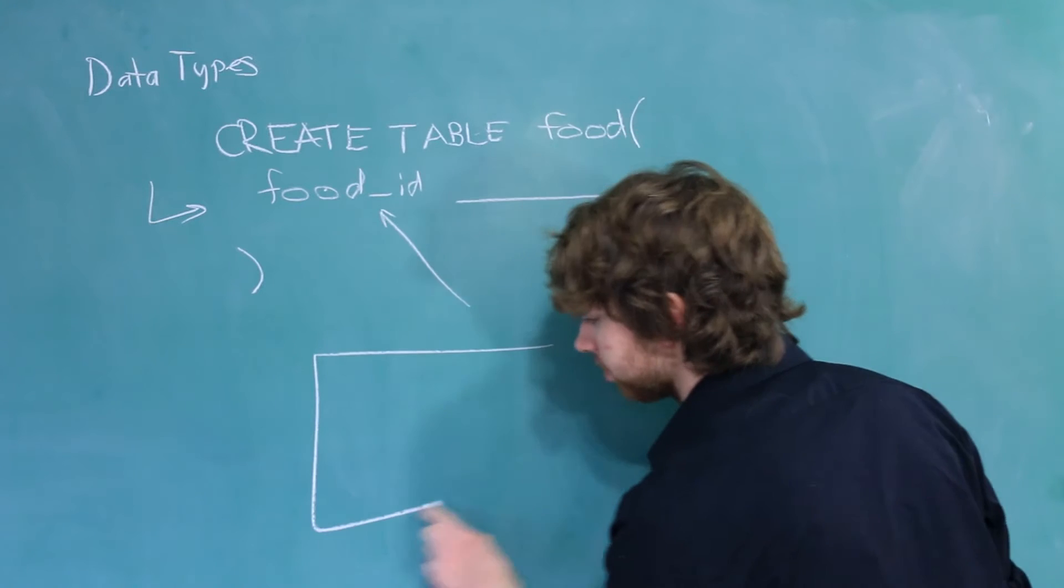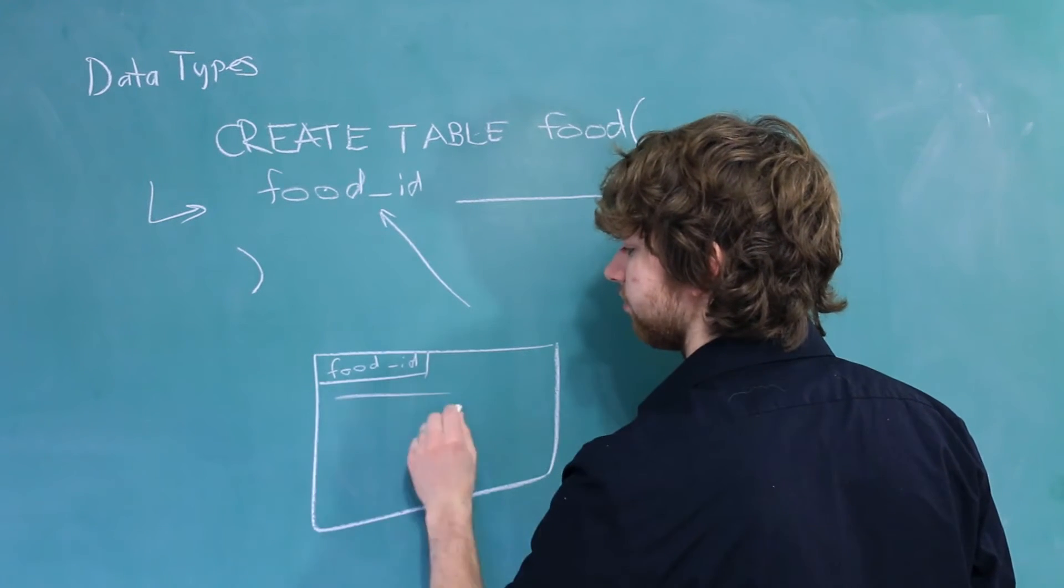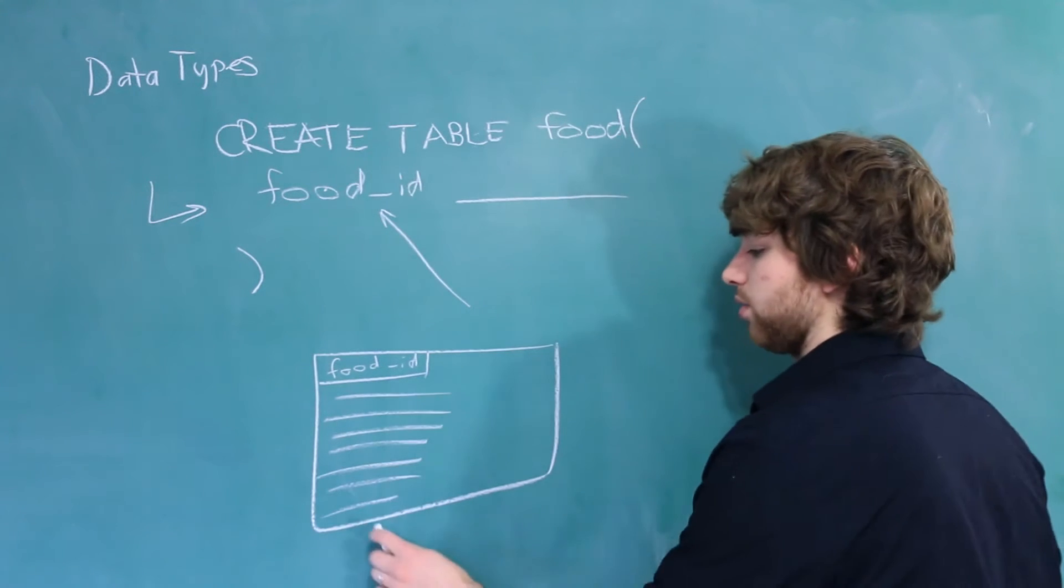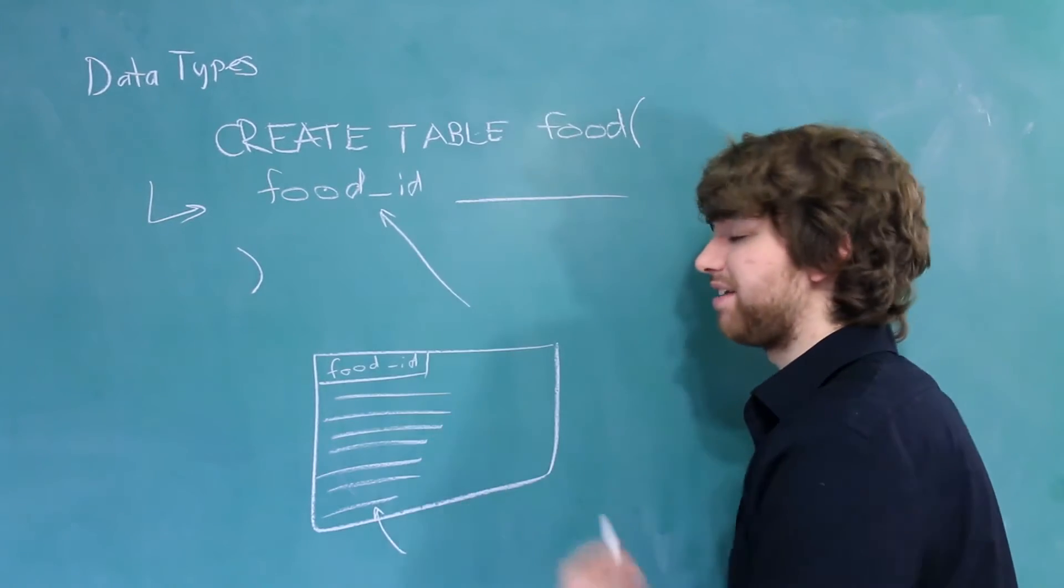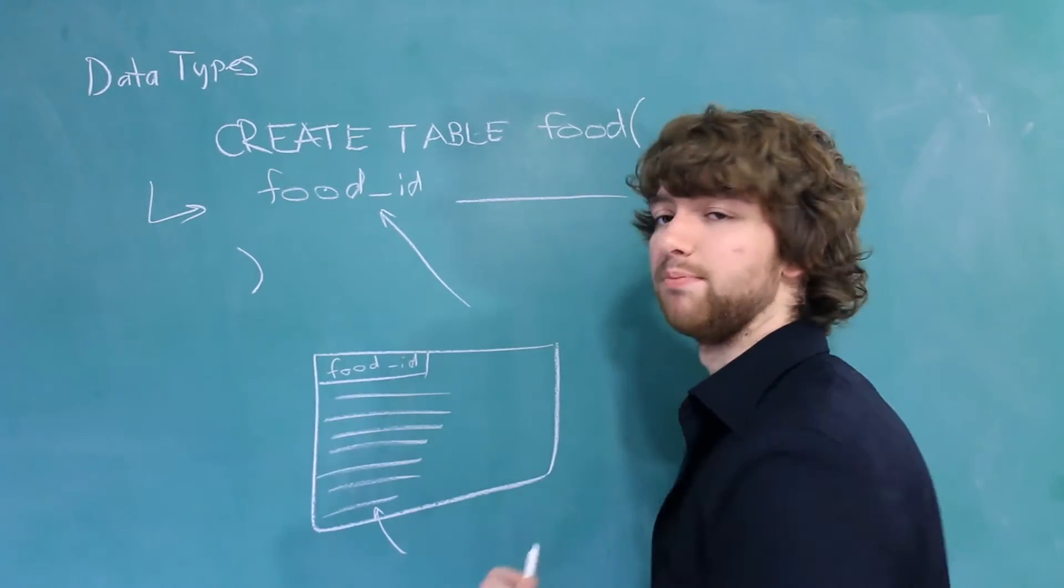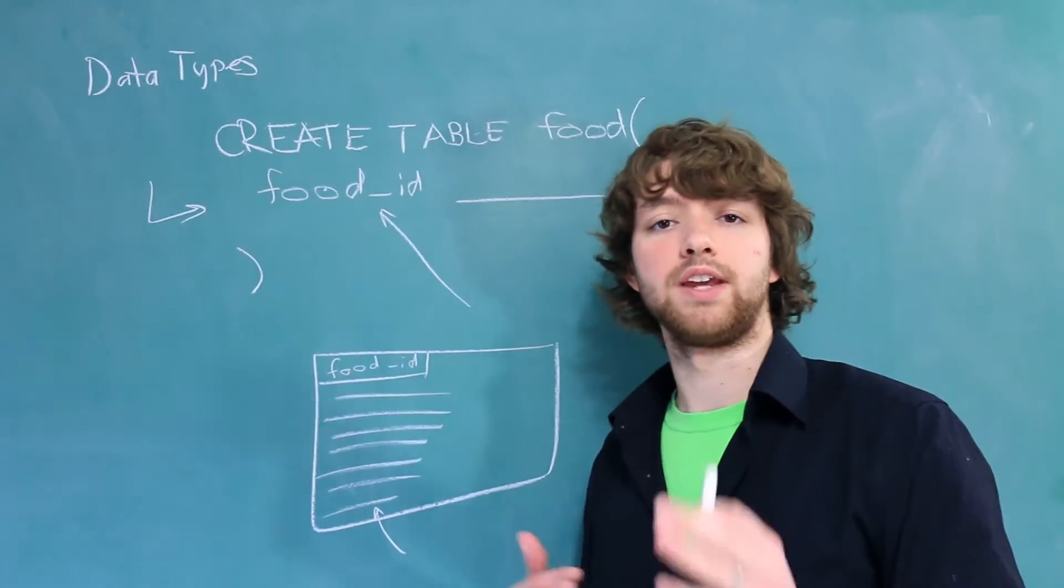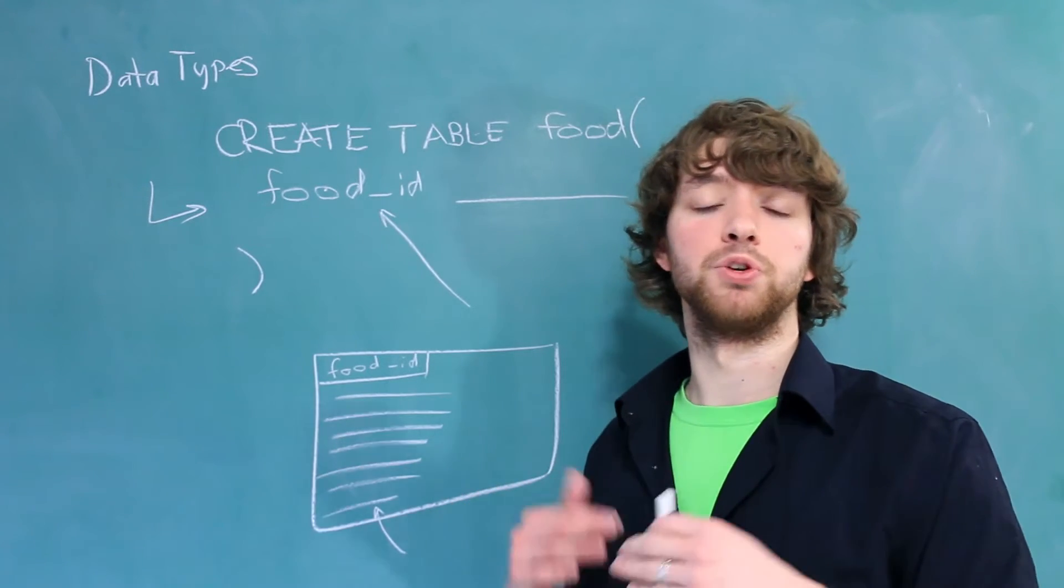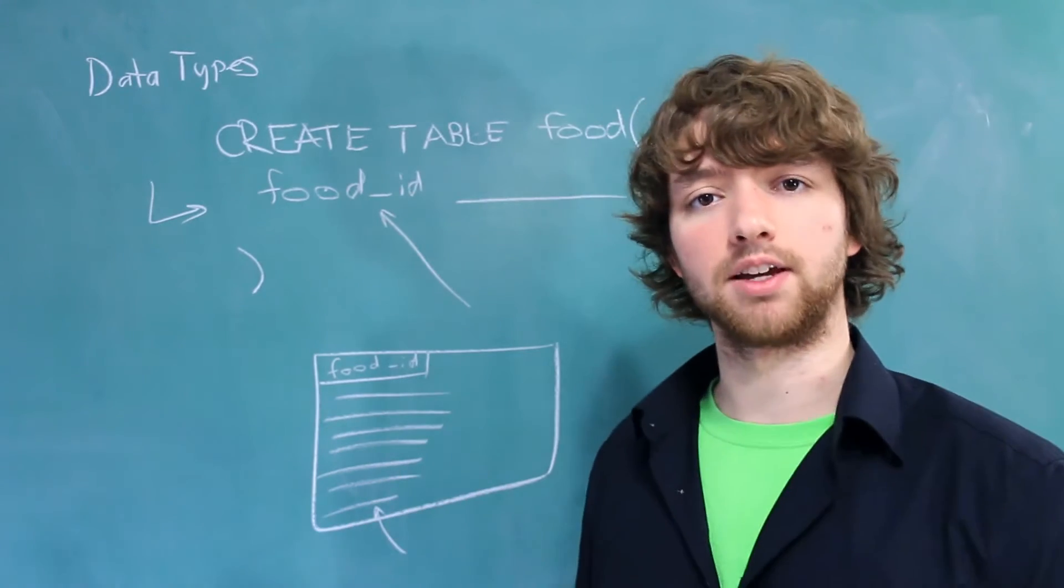So think of us having a table. One of the columns is Food ID. Every single value for this column, every single row, is going to have to have data of a certain Data Type. What is the benefit of this though? Well, if the database has all of the same type of data for a column, it is able to work with that data faster, it is able to optimize storage, and it is able to restrict incorrect data, data that doesn't fit that Data Type.